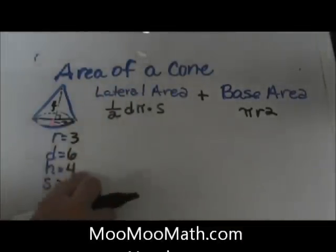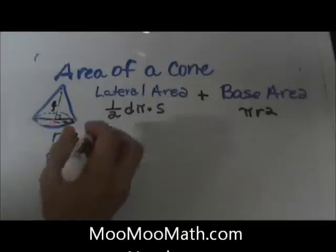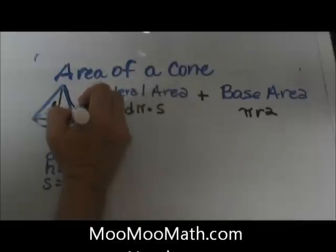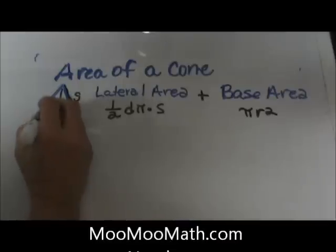Now the height is actually not used in our formula. We need to know the slant height. So let's look at how to find the slant height. It is part of a triangle and it is the side of the cone right here. That is considered our slant height.